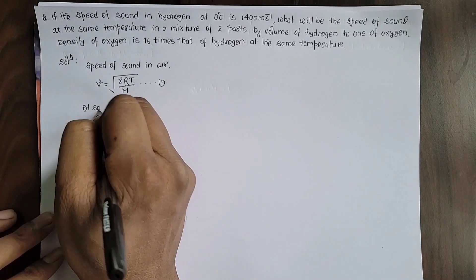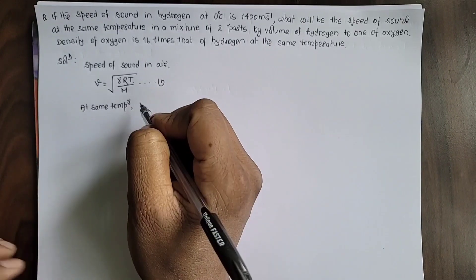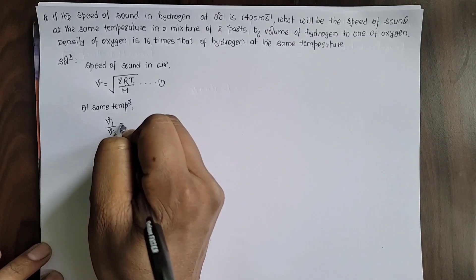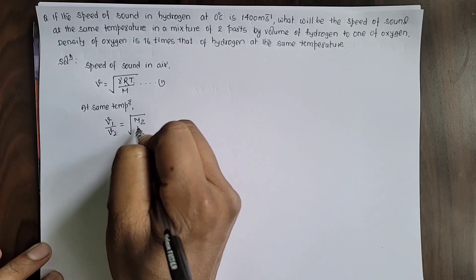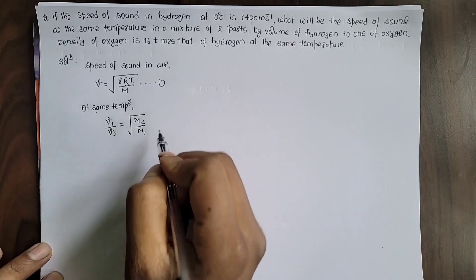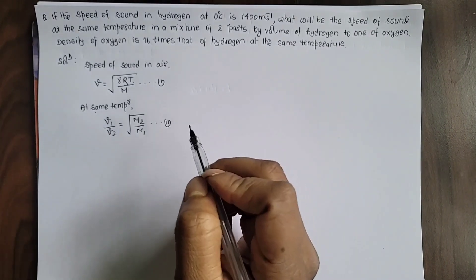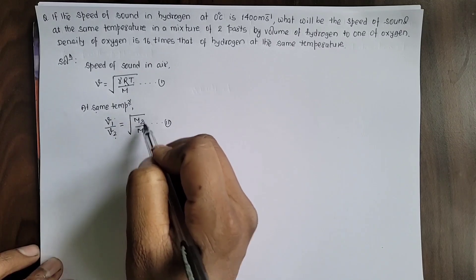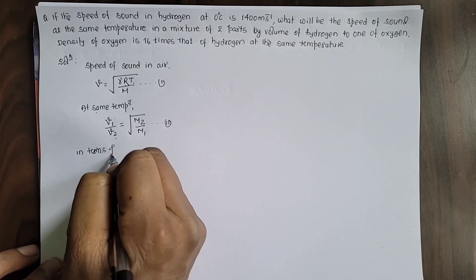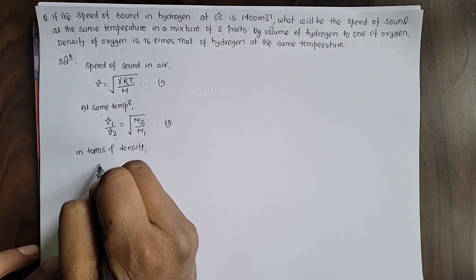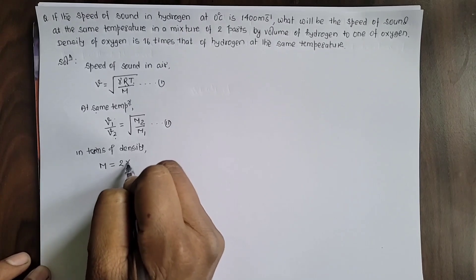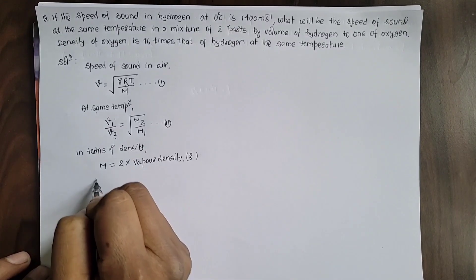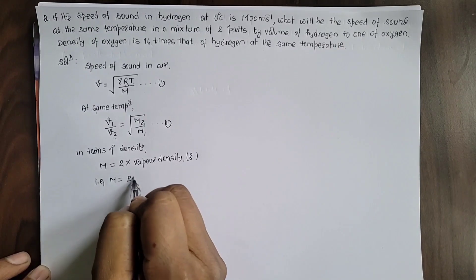At the same temperature, the ratio of speed of sound in two different media can be calculated by the formula V1/V2 = √(M2/M1). The molar mass of a gas M can be written as 2 times the vapor density, that is molar mass equals 2 times vapor density ρ.